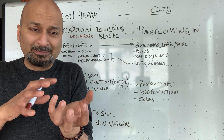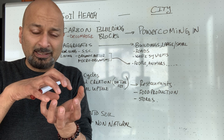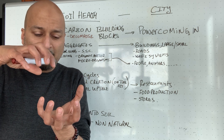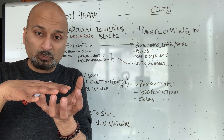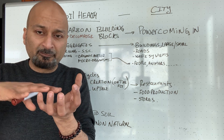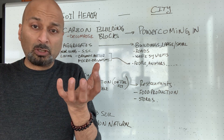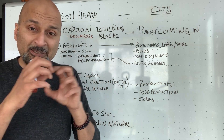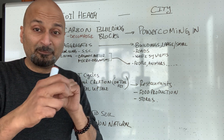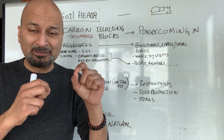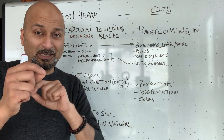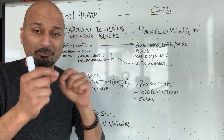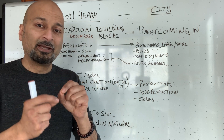Soil has structures within it, and it has pocket holes where air flows through, where water flows through, where living microorganisms live and flow through, shuttling food or minerals. The food of the soil — minerals, essentials, and enzymes — are getting shuttled back and forth within those structures.